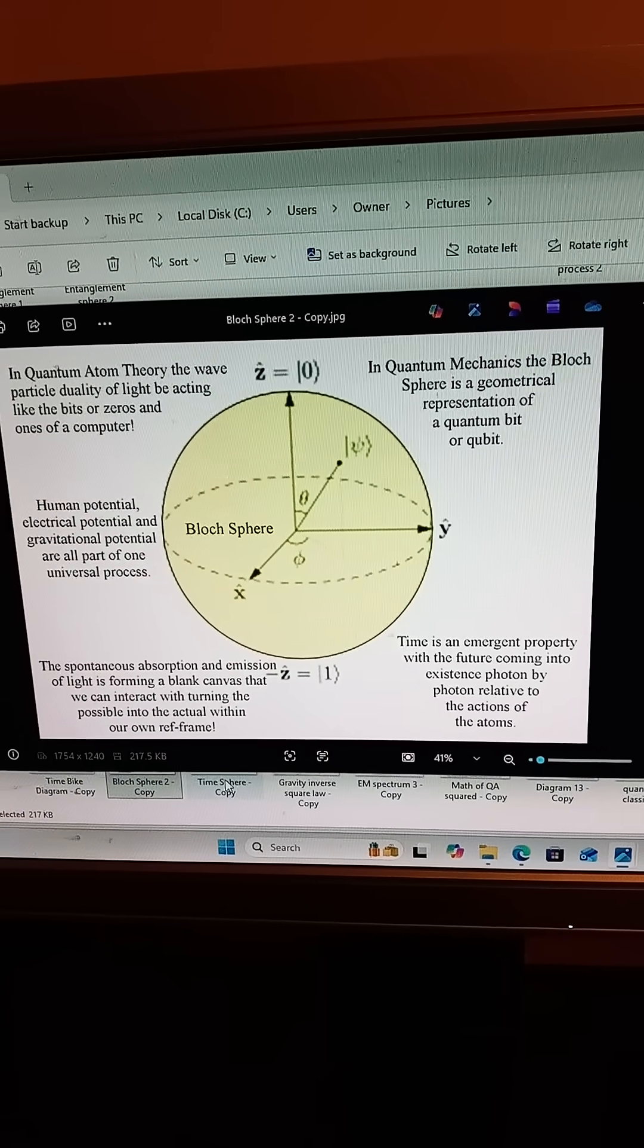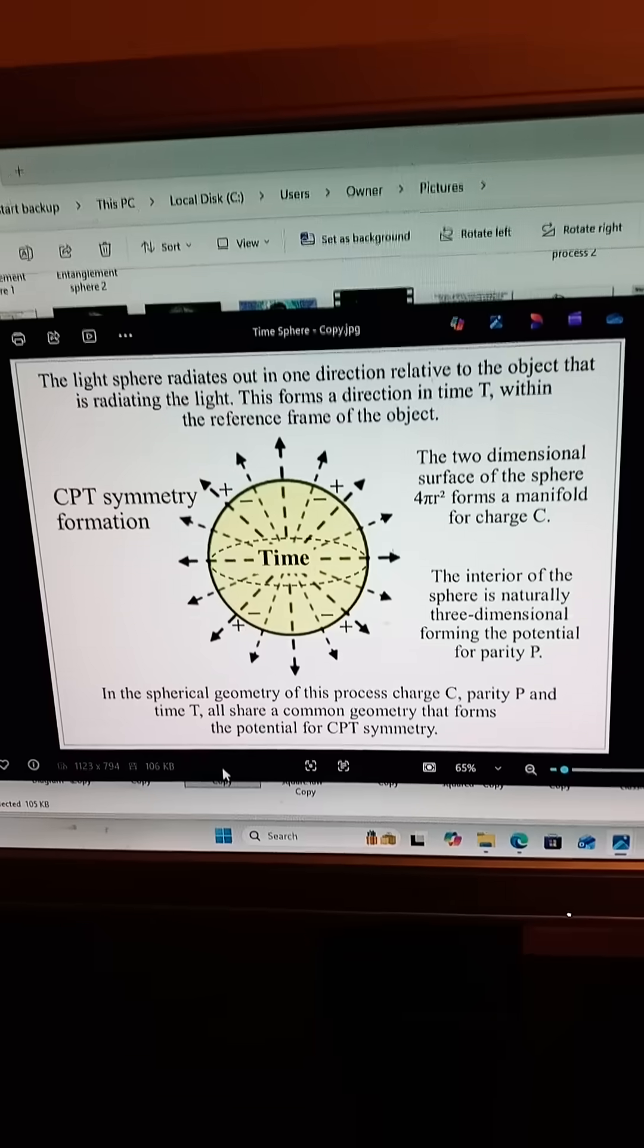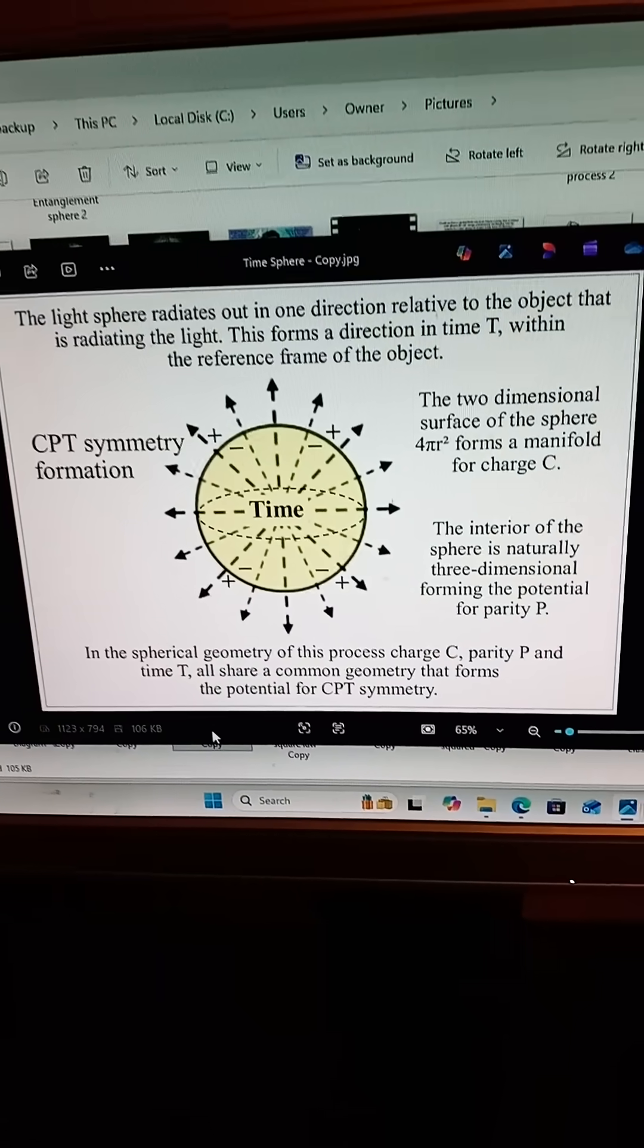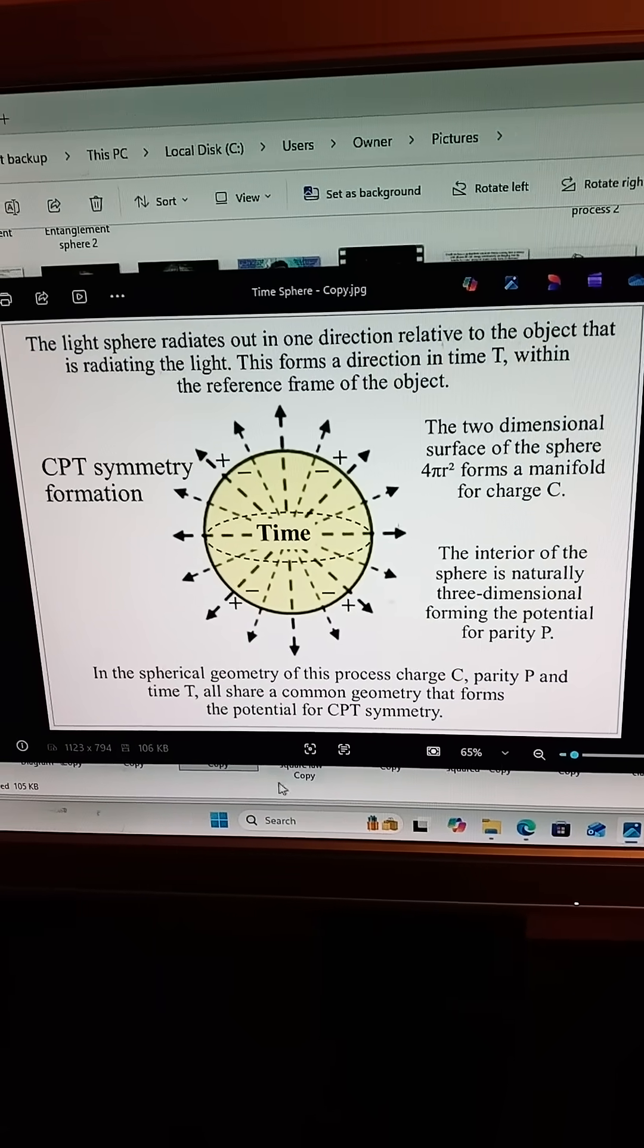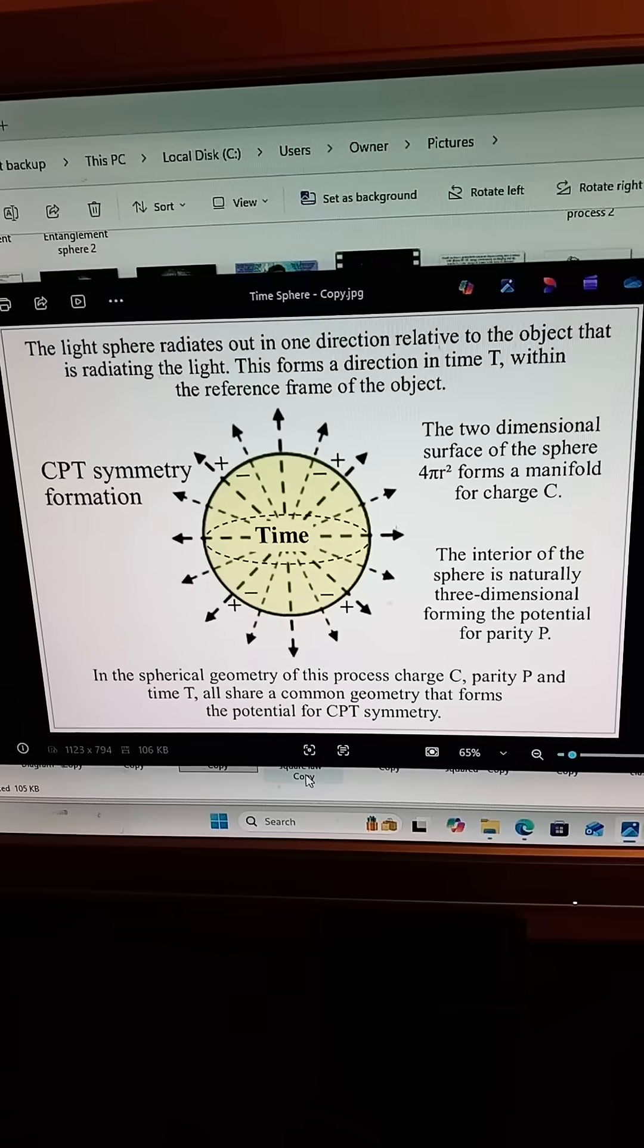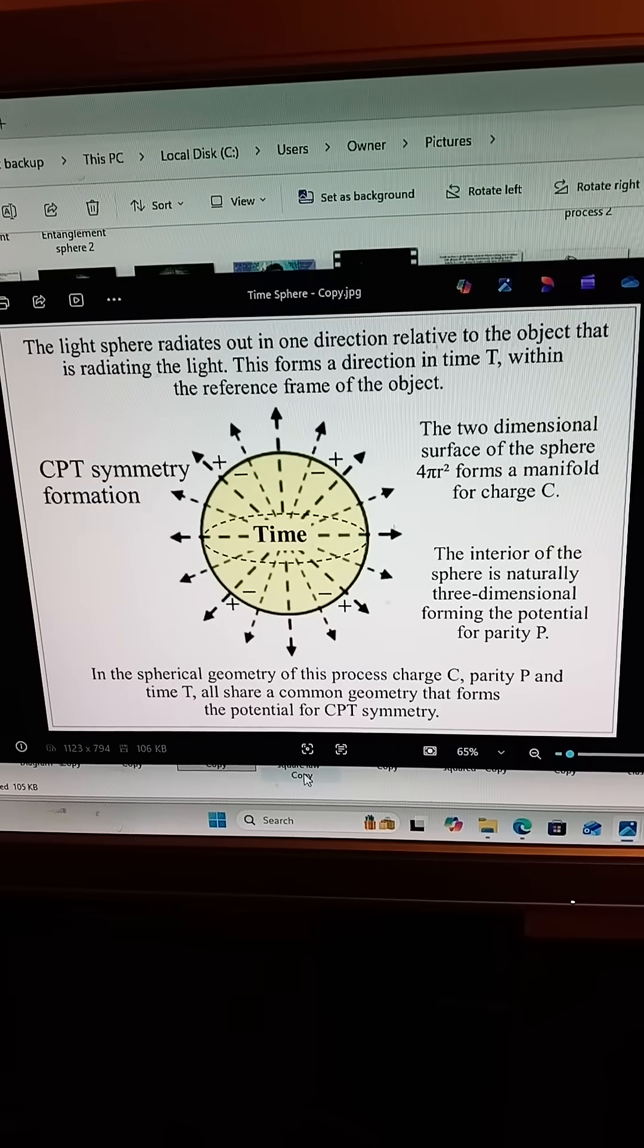Light and matter are not separate substances. They are two expressions of the same underlying process. Measurement is interaction. When a quantum system interacts with its environment, symmetry is broken.